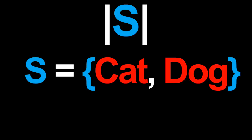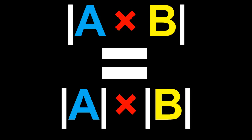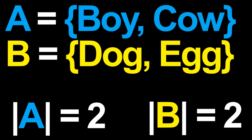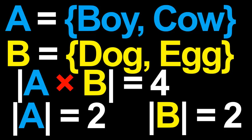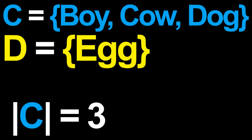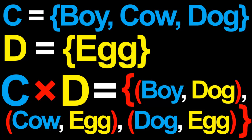Let us now introduce a small piece of notation. If we are given any set S, then the number of elements in S is denoted by |S|. For example, if S consists of cat and dog, then |S| equals 2. In general, for any two sets A and B, the number of elements in their Cartesian product equals the number of elements in A multiplied by the number of elements in B. For our example with A equal to boy and cow, and B equal to dog and egg, |A| equals 2 and |B| equals 2, so |A×B| equals 4 — indeed, A×B consists of four ordered pairs. Similarly, C×D consists of three elements since |C| equals 3 and |D| equals 1.